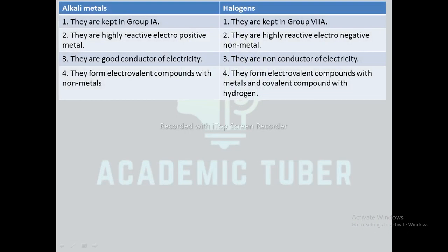Differences between alkali metals and halogens: alkali metals are kept in group 1A whereas halogens are kept in group 7A. Alkali metals are highly reactive electropositive metals whereas halogens are highly reactive electronegative non-metals. Alkali metals are good conductors of electricity whereas halogens are non-conductors. Alkali metals form electrovalent compounds with non-metals, whereas halogens form co-electrovalent compounds with metals and covalent compounds with hydrogen.